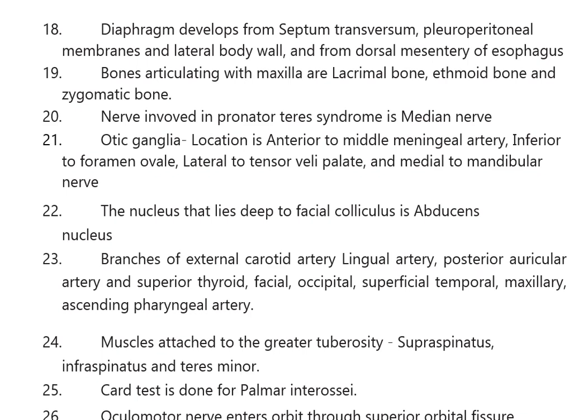Branches of the external carotid artery are: lingual, posterior auricular, superior thyroid, facial, occipital, superficial temporal, maxillary, and ascending pharyngeal arteries. Muscles attached to the greater tuberosity are supraspinatus, infraspinatus, and teres minor.